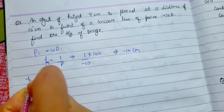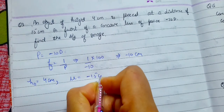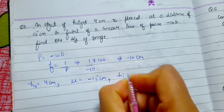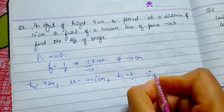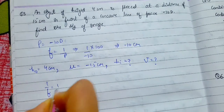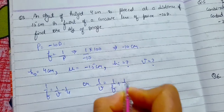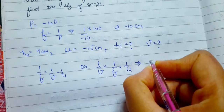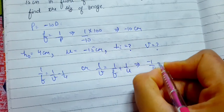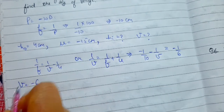We have height of object = 4 cm, u = -15 cm. We need to find image height and v. According to the lens formula: 1/f = 1/v - 1/u, so 1/v = 1/f + 1/u. Putting values f = -10 and u = -15, by solving we get 1/v = -1/6, so v = -6 cm.